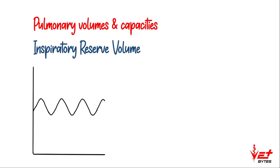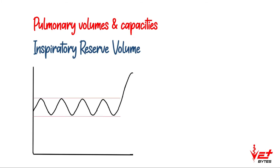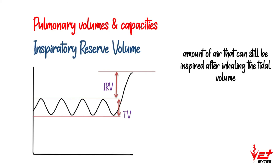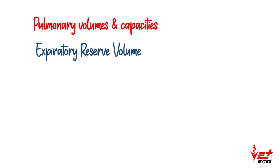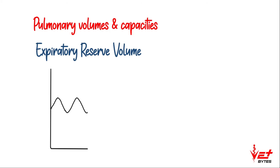The next one is inspiratory reserve volume. If there is a forced inspiration, the volume of the lung reaches maximum. We know this portion is the tidal volume, and the volume over and above the tidal volume is called inspiratory reserve volume — the volume of air that can be inspired even after inhaling the tidal volume. The sum of both inspiratory reserve volume and tidal volume is referred to as inspiratory capacity.